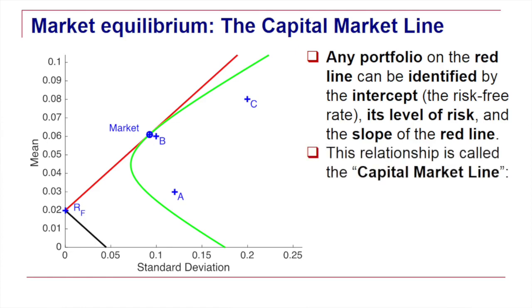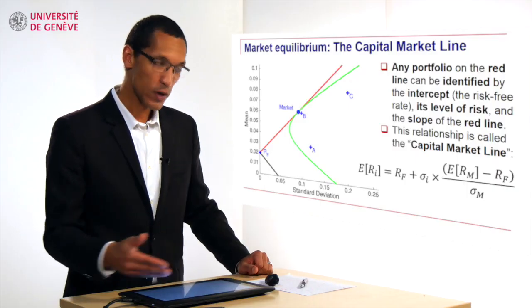And it's just a reinterpretation of the efficient frontier including the risk free rate. I'm going to display now the equation of this capital market line. And this is precisely what we've just said, right?